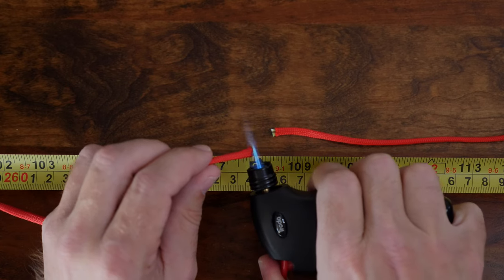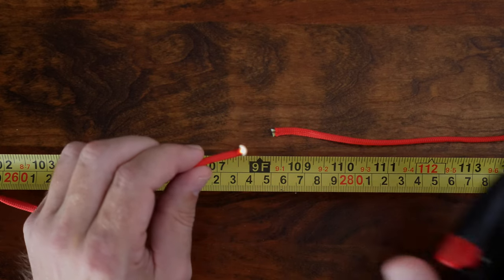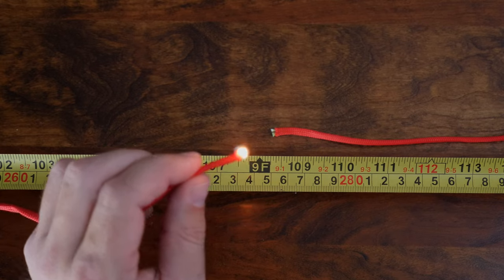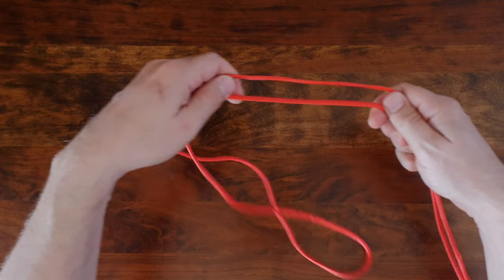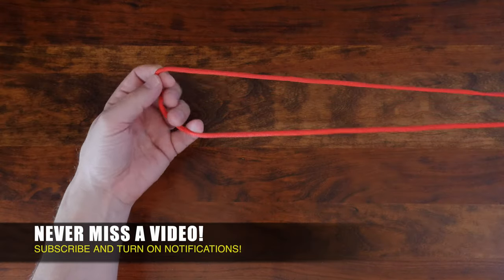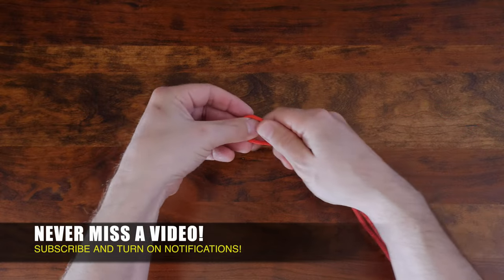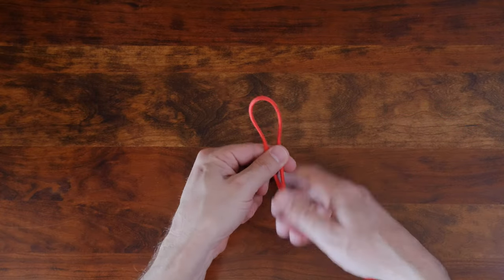With the paracord cut to size we'll use our lighter to melt the ends to prevent them from fraying and to make the paracord easier to work with. Now that we have our paracord cut to length, we'll find the middle and prepare to attach the buckle.